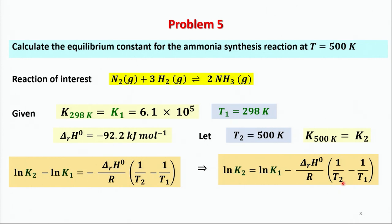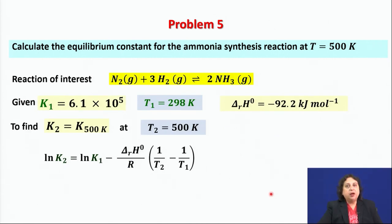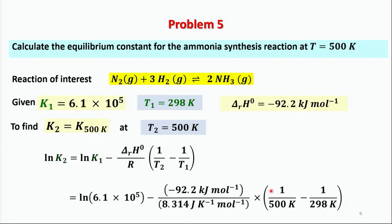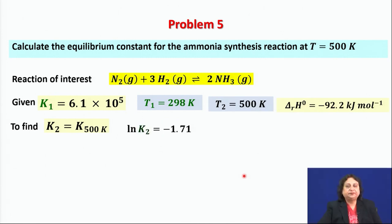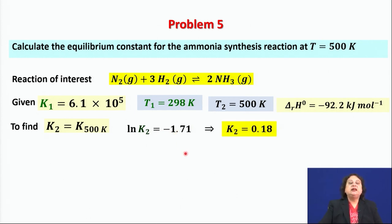All quantities on the right-hand side are known, so substituting gives ln K₂ = −1.71, which means K₂ = 0.18.